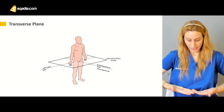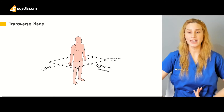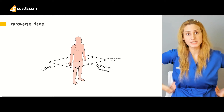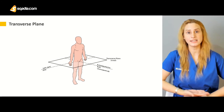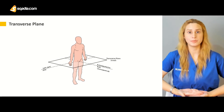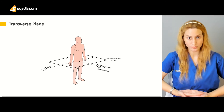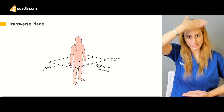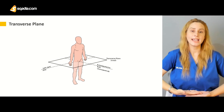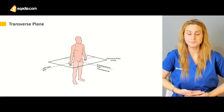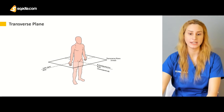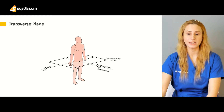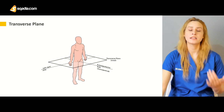Then you have the transverse plane. You are dividing your body from the mid — the lower part is below and the upper part is different. So you're going from anterior to posterior, cutting your body like this — that would be the transverse plane, which is also called the axial plane. If you're dividing your body like this in cross-section, that is the transverse or axial plane, dividing the body into the upper half and the lower half.